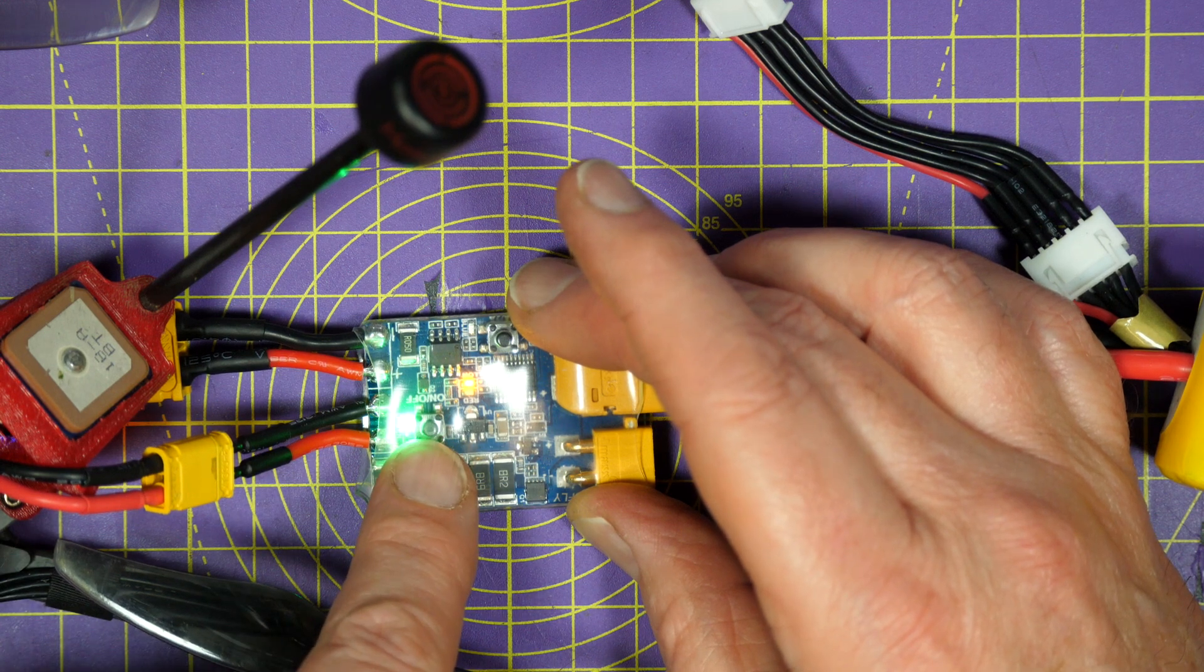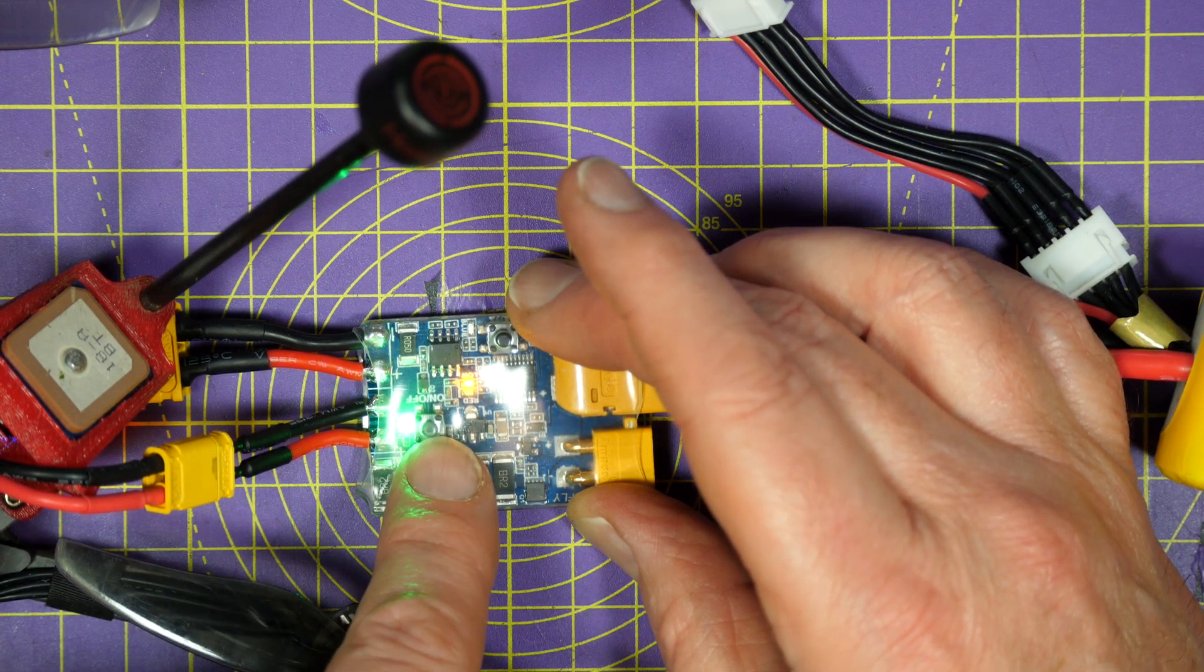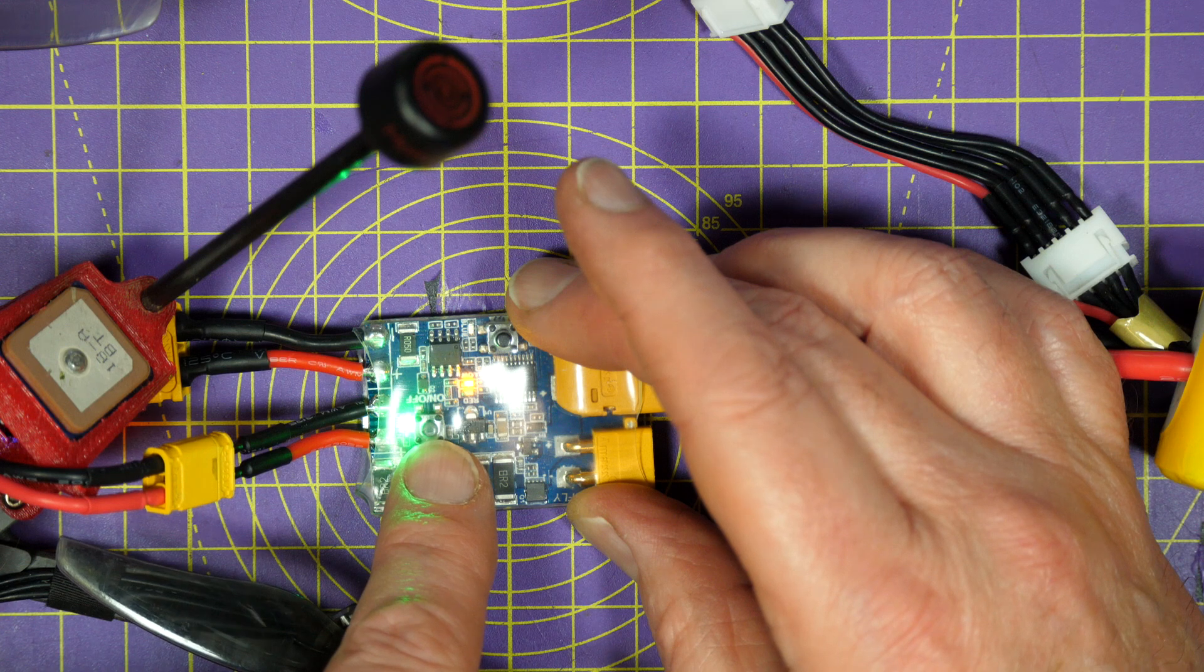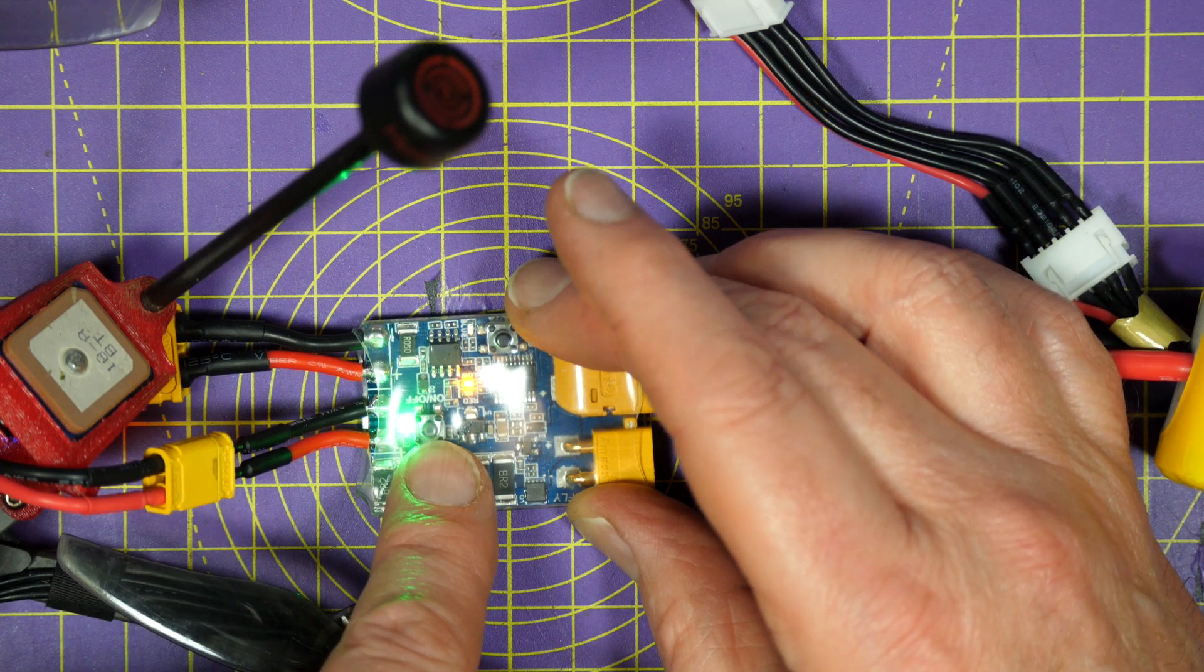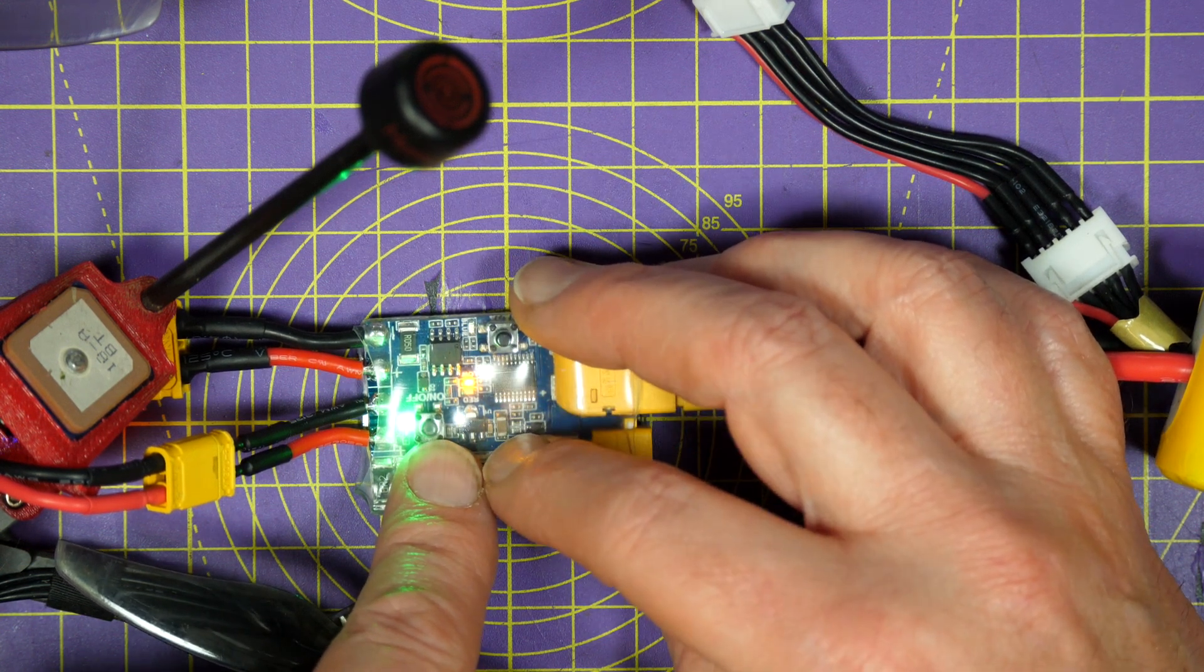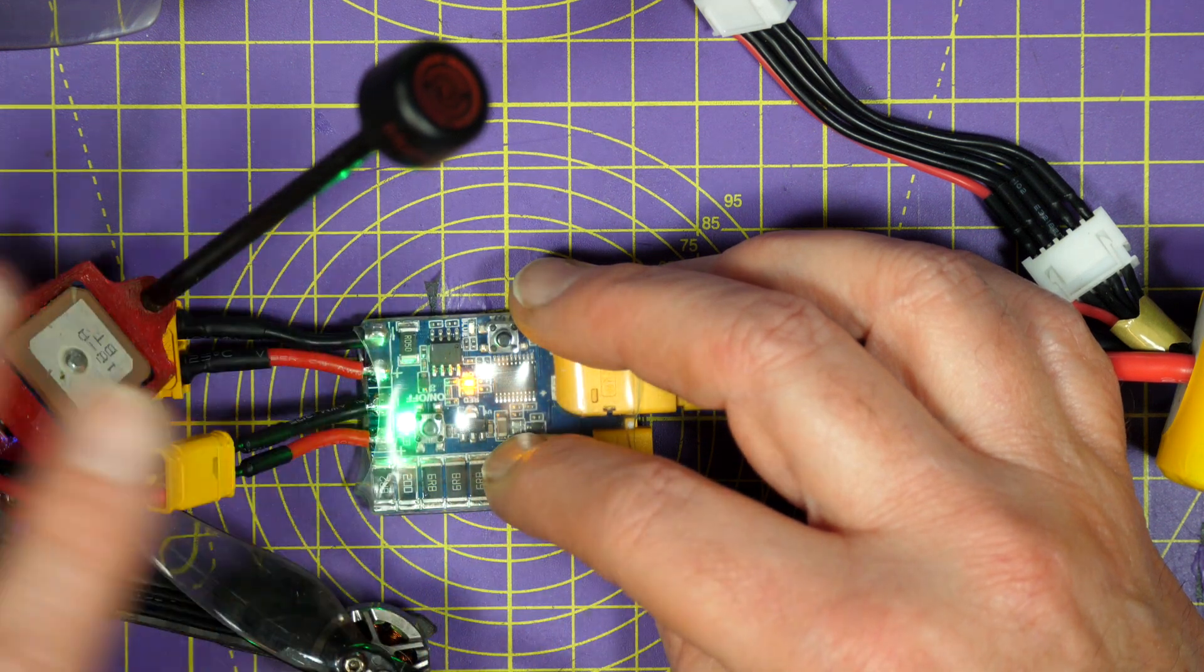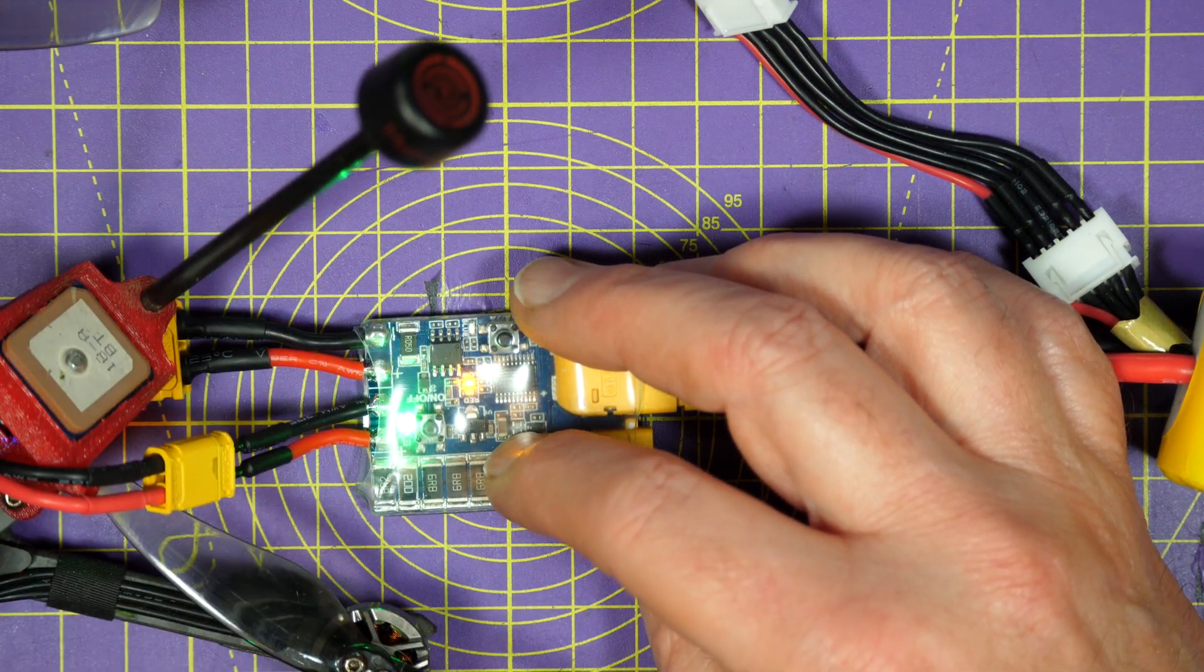And this button is new. It's something they've added from the version 1 to the version 2. And it's massively useful. It means binding a receiver is just so much easier. It's just ridiculously simple.